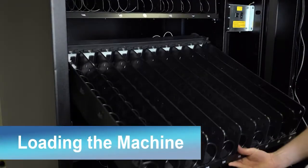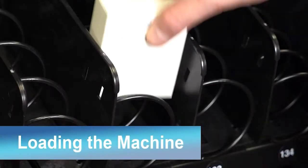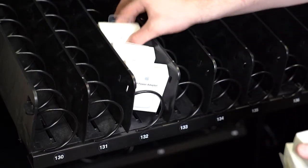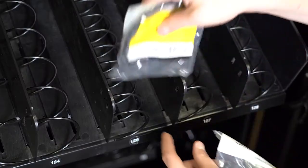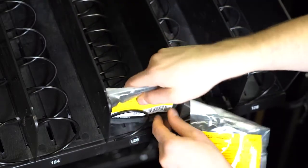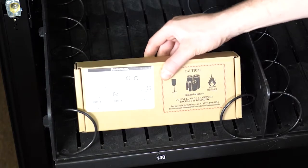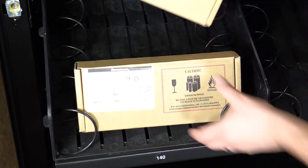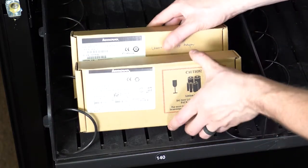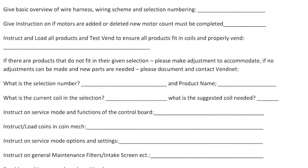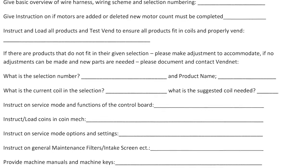To begin loading, lift the tray up and fold down. Place the product securely between the coils. If there are any products that do not fit in their given selection, please make adjustments to accommodate. All adjustments must be noted on the install sheet. If no adjustments can be made and new parts are needed, please document on the install sheet and contact Vennet at 800-833-4411.